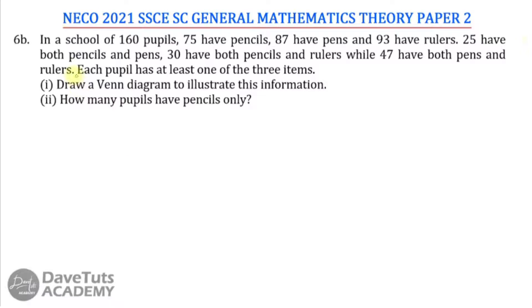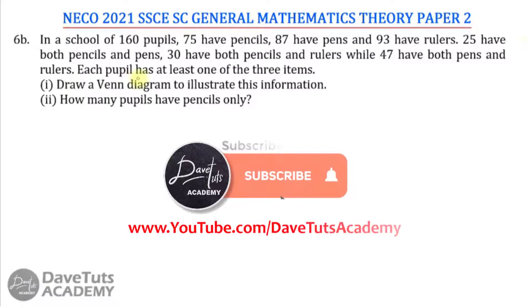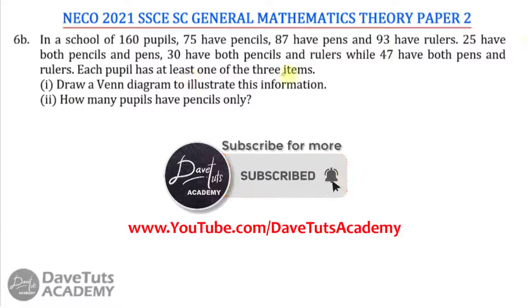We have this question on set theory with Venn diagrams. We are told that in a school of 160 pupils, 75 have pencils, 87 have paints, 93 have rulers, 25 have both pencils and paints, 30 have pencils and rulers, while 47 have both paints and rulers. Each pupil has at least one of the three items.